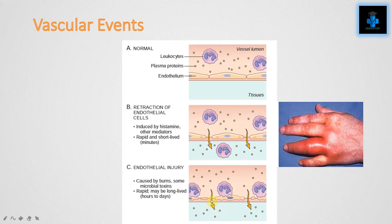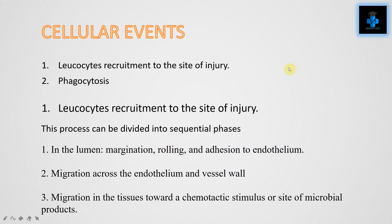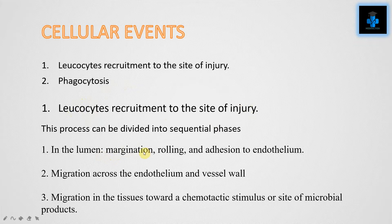Leukocytes have to travel from the vessel to the tissue, mediated by adhesion molecules and chemokines. Next is the cellular events — two steps take place: first is recruitment of leukocytes to the site of injury, and next is phagocytosis. The recruitment process can be divided into sequential phases. First, in the lumen: margination, which is the alignment of leukocytes to the endothelium, followed by rolling and adhesion to the endothelium.